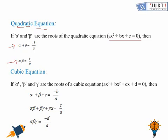Now about the cubic equation. If there is a cubic equation ax cubed plus bx squared plus cx plus d equals zero, and alpha, beta and gamma are the three roots, then: alpha plus beta plus gamma equals minus b by a; alpha beta plus beta gamma plus gamma alpha equals c by a; and alpha beta gamma equals minus d by a. Here b is the coefficient of x squared, a is the coefficient of x cubed, c is the coefficient of x, and d is the constant.